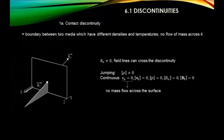The contact discontinuity doesn't really appear commonly in our solar system - there are some examples between shocks in supernovae. It describes two media with different densities where there is no interaction: the magnetic field doesn't change, the speed doesn't change, just two different media with different densities and temperatures, and no mass flows across the discontinuity.